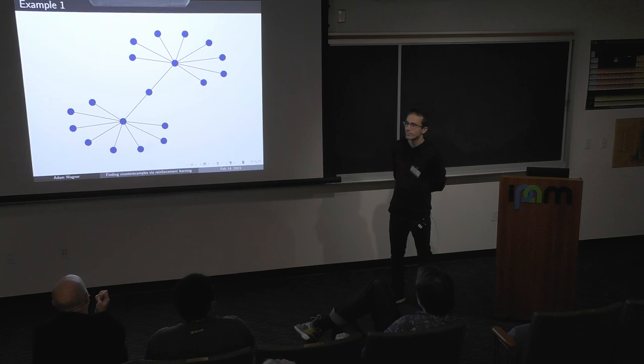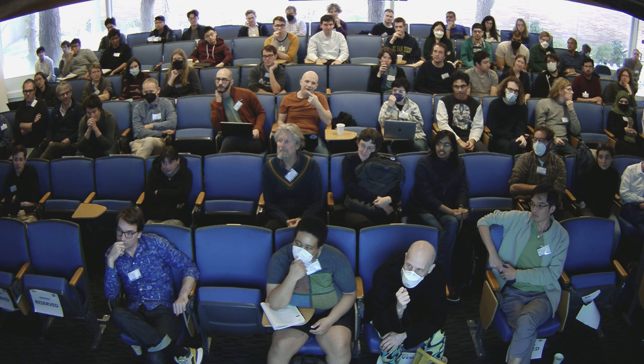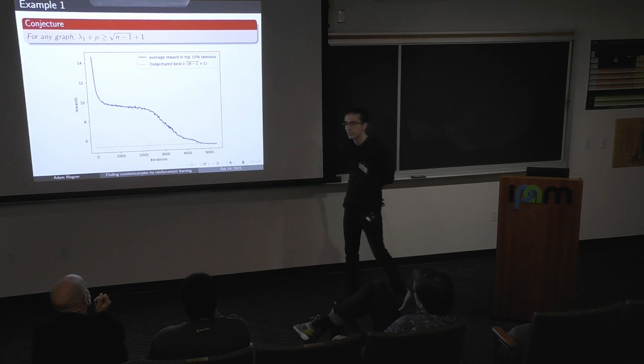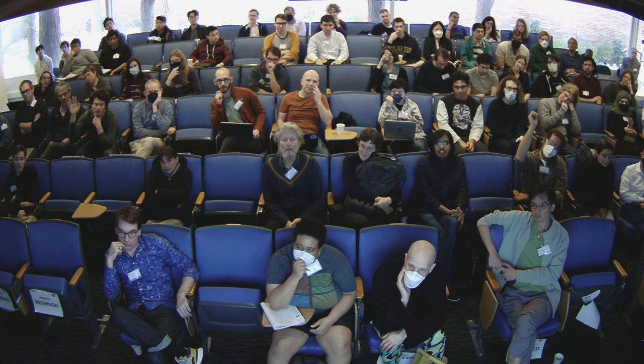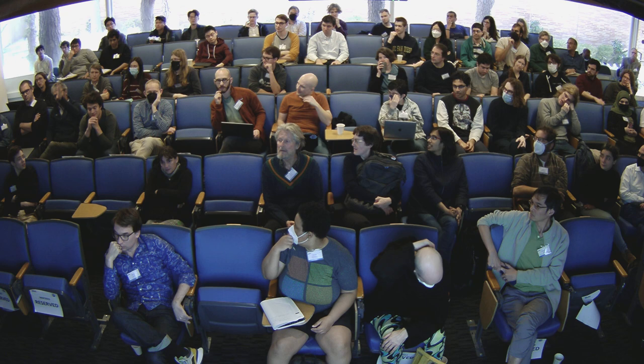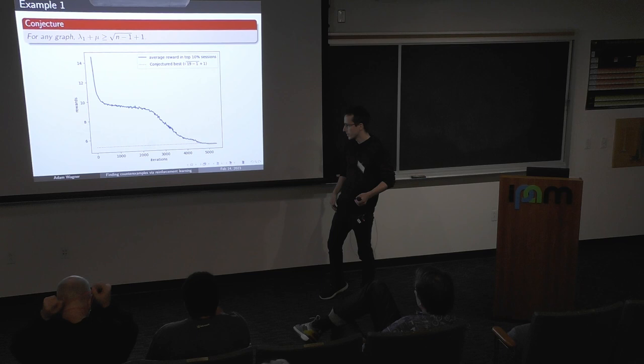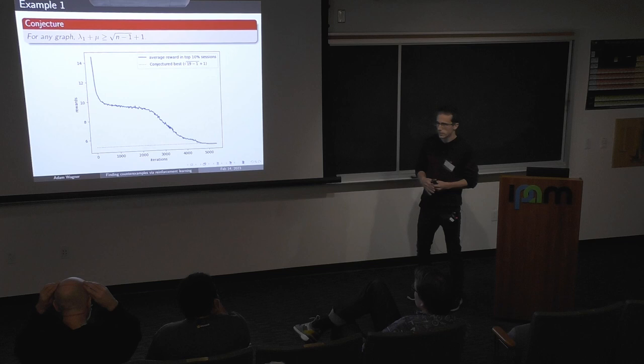For n = 19, the graph has 19 × 18 / 2 = 171 edges to consider. The graph shows about 4,500 to 5,000 iterations, where each iteration consists of approximately 100 to 1,000 games - I don't remember exactly. Both λ₁ and μ have fast polynomial-time algorithms to compute on the fly, so that wasn't an issue. The program is offering edges repeatedly across iterations.